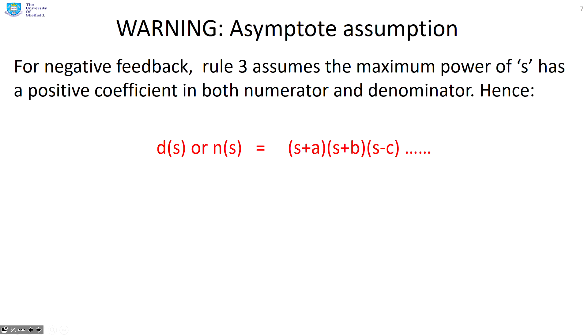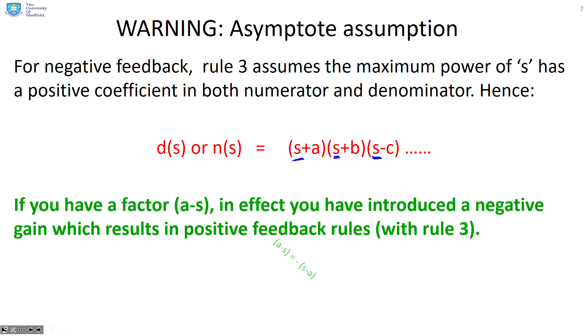And just a reminder, what did we do when we talked about the asymptote directions with negative feedback? We made an assumption. We assumed that the maximum power of s had a positive coefficient.